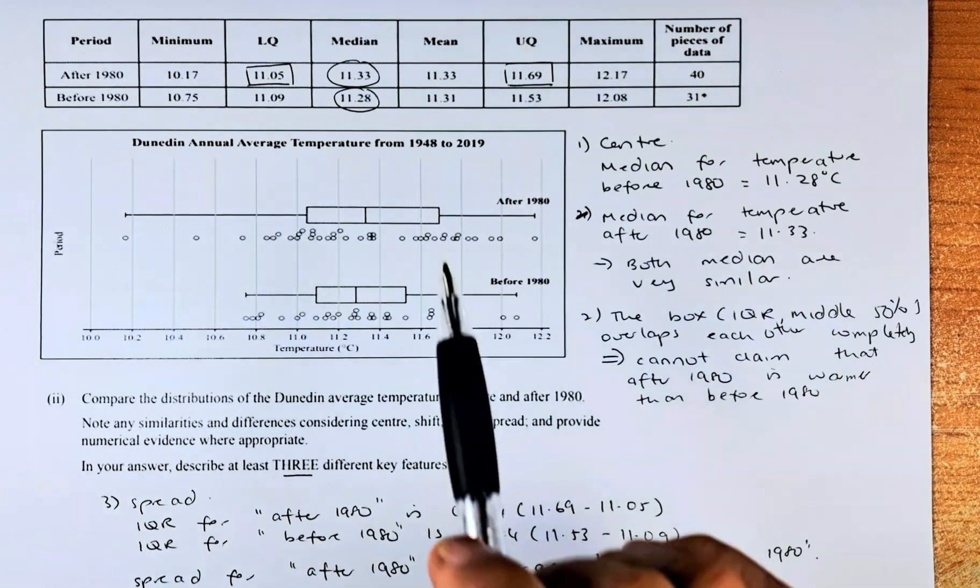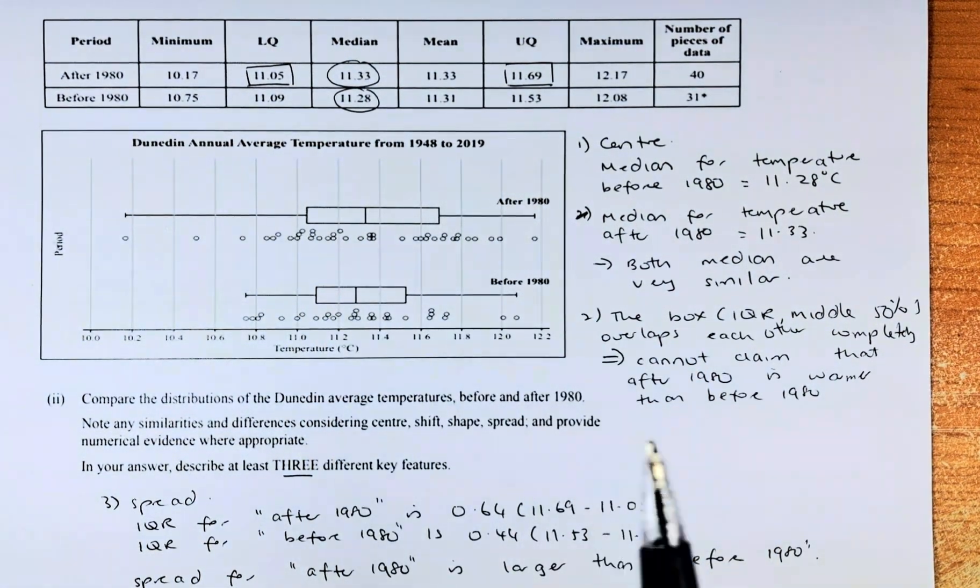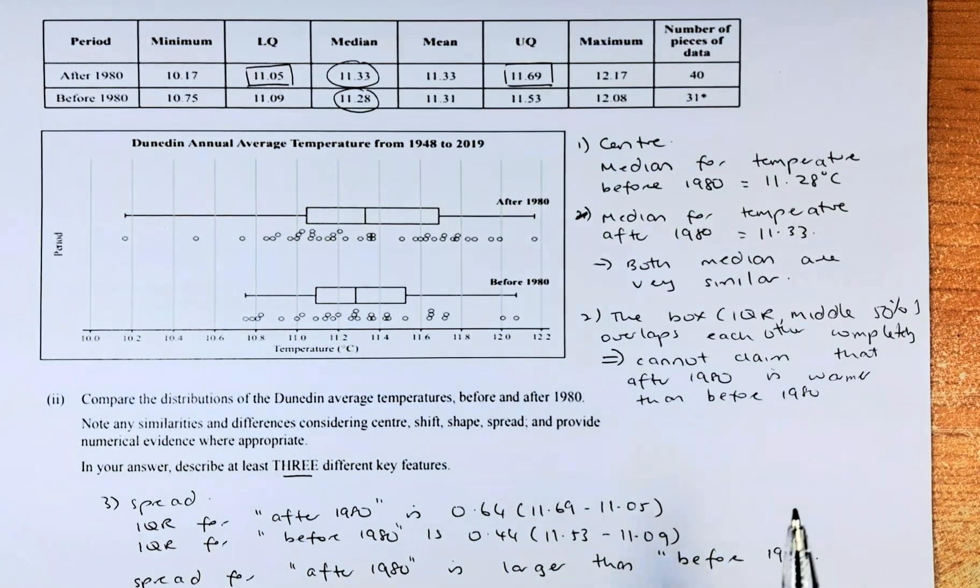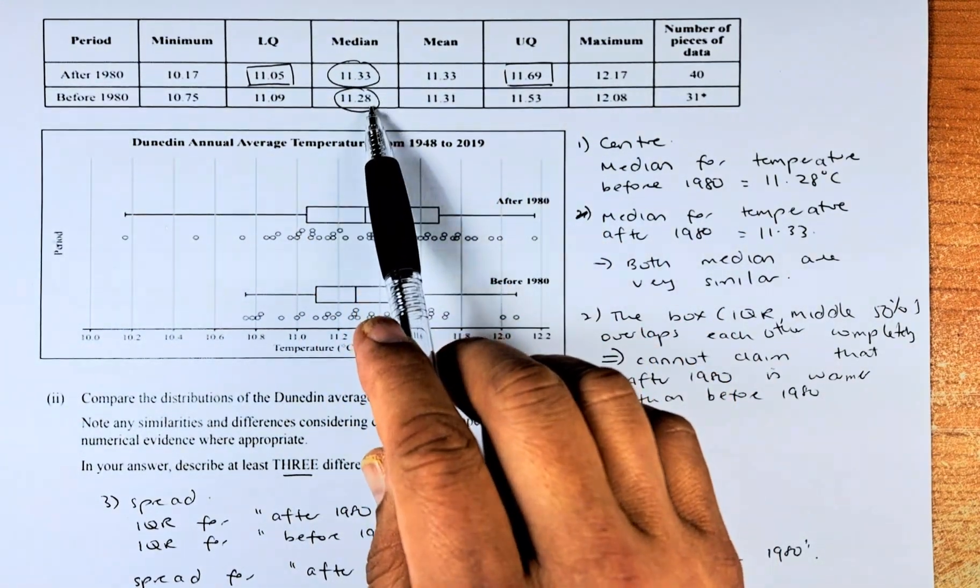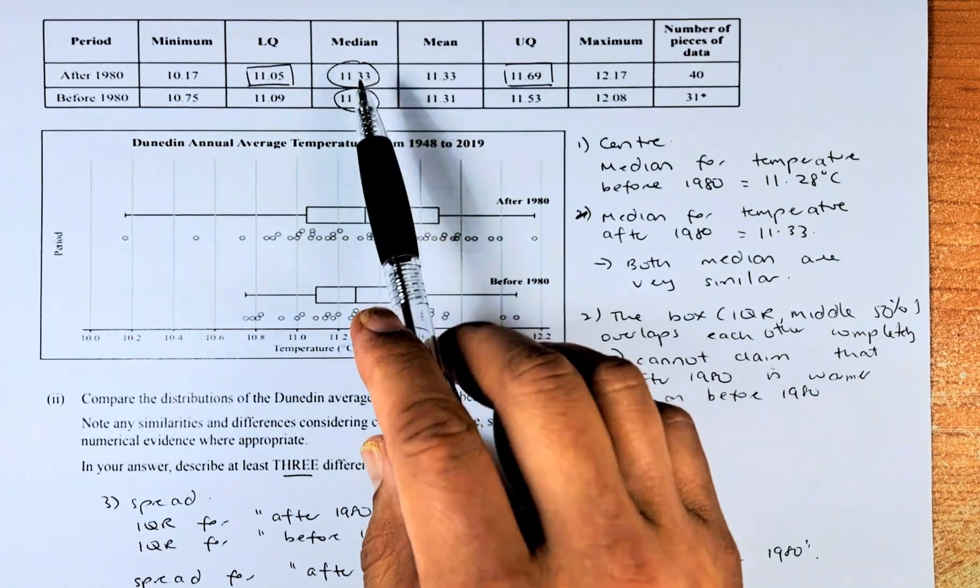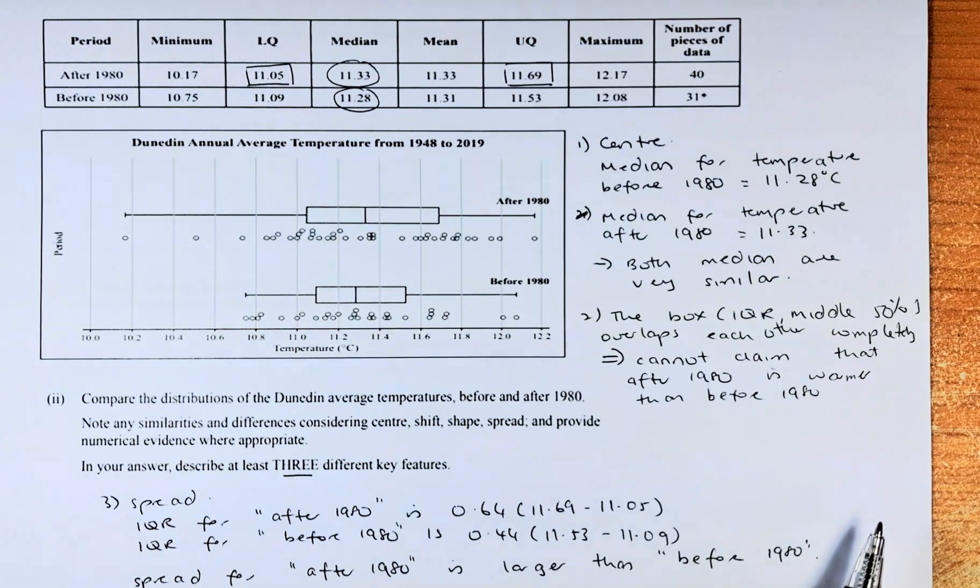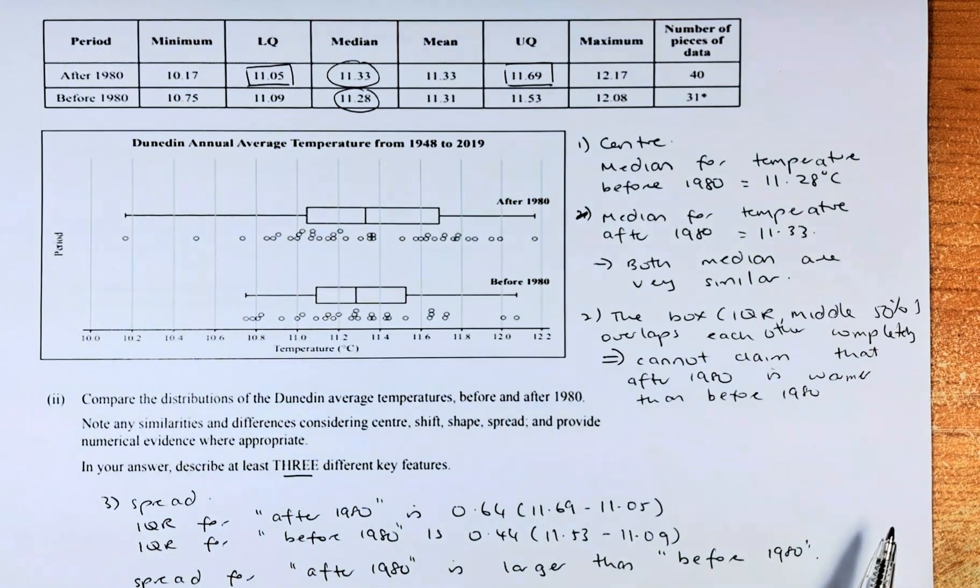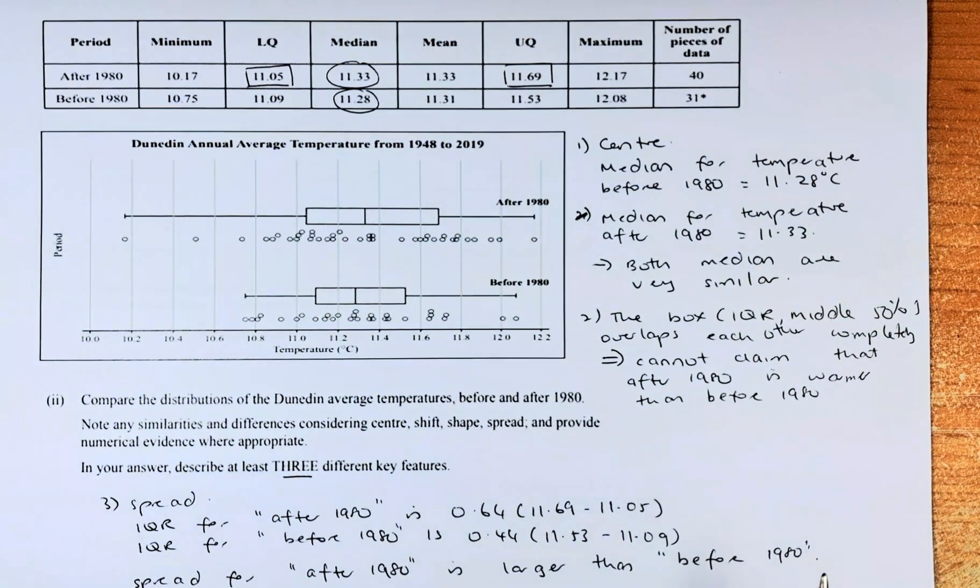First, we talk about center. Center is about the median. We shall talk about the median because in NCEA Level 1, median is more important than mean. So the median for temperature before 1980, look at the table here, is going to be 11.28. While the median for temperature after 1980 is 11.33. As you can see, the median is about the same. The difference is only 0.05 degrees centigrade. So you can say both medians are very similar.